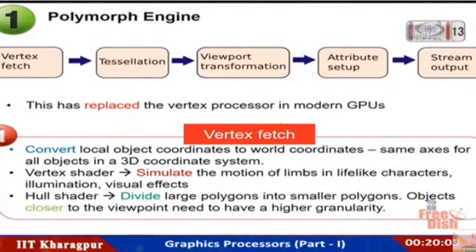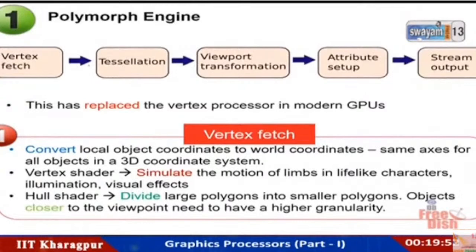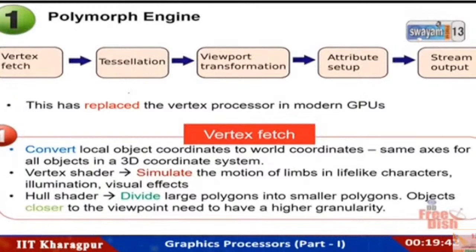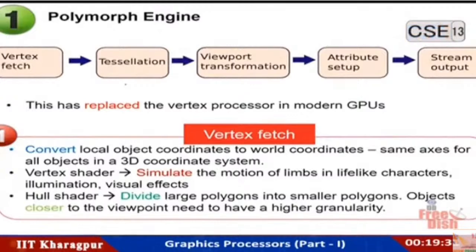In modern GPUs, the vertex processor has been replaced by the polymorph engine, which itself is pipelined with five stages: vertex fetch, tessellation, viewport transformation, attribute setup, and stream output. We are mostly discussing the NVIDIA family of GPUs here.